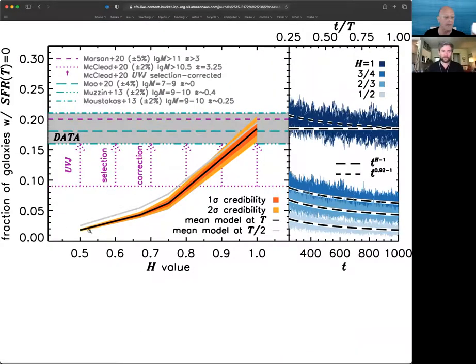Let's look at Figure 1. Ignore the right-hand panel for now. The left-hand panel at the bottom has different values of H, from a half, which is purely random, over to one, which is maximally correlated. The black line with the orange arrow bar is the fraction of galaxies at the end of the chain that have zero star formation rate, that are passive. When the walk is totally random, it's below 5%, and when it's totally correlated at H equals one, it's up around 16%. What does data say?